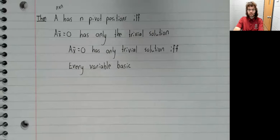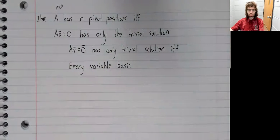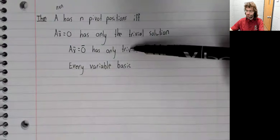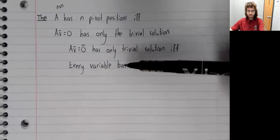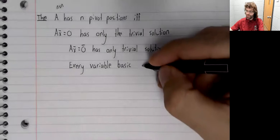Ax equals zero has either only the trivial solution, or infinitely many solutions. And that's infinitely many solutions if there are free variables, only the trivial solution if there are only basic variables. So this has only the trivial solution, if and only if every variable is basic.